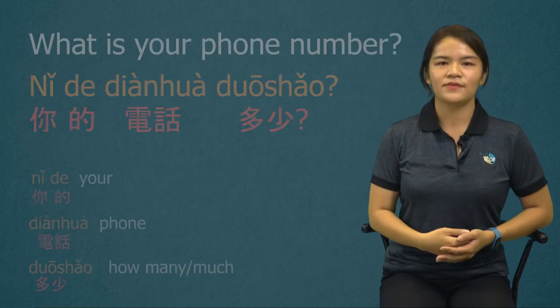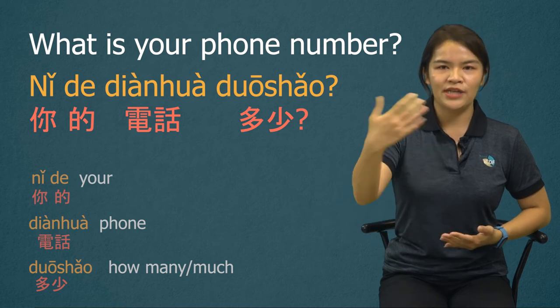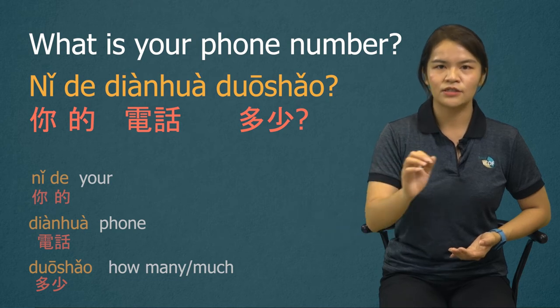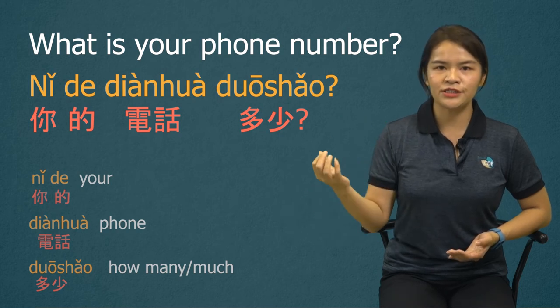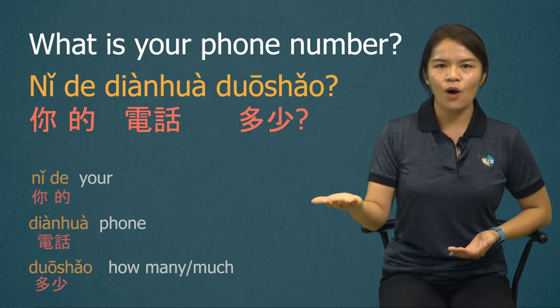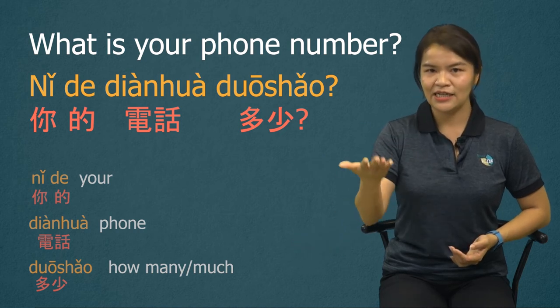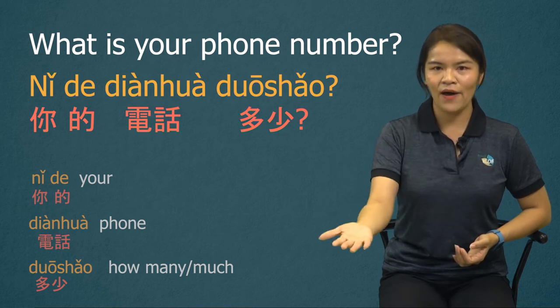So we learned the sentence 'my number is'. Now let's learn how to ask your number. Your is 你的. So 'what is your phone number?' is 你的电话多少? 多少 means 'how many' or 'how much' — it's a question word to ask about quantity or numbers. 你的电话多少?